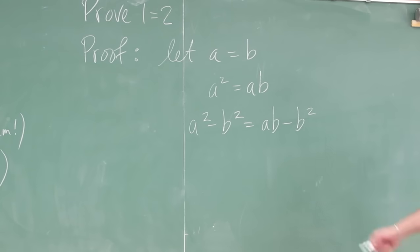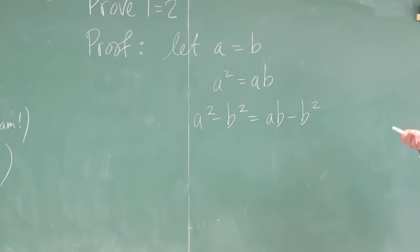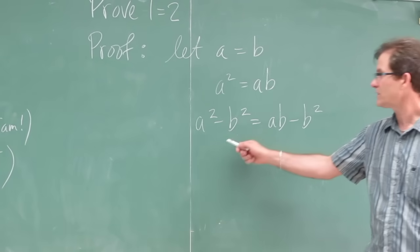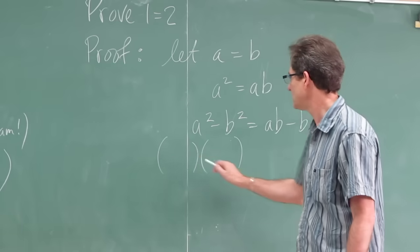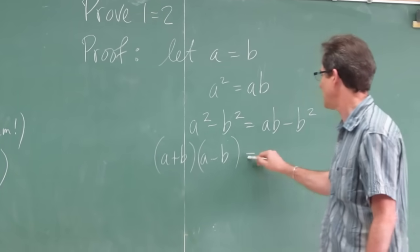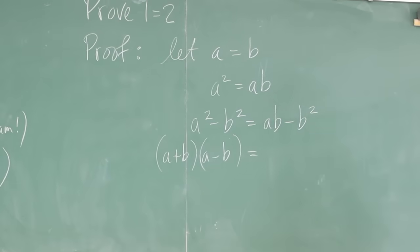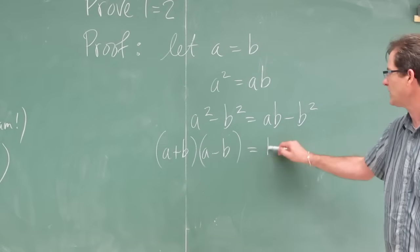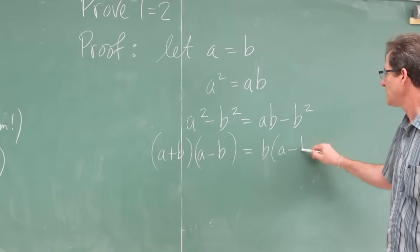Then, you can factor both sides by a different method. Left-hand side, difference of squares. So what do you get? A plus b times a minus b. On the right-hand side, you can factor by factoring out b. And you get a minus b.